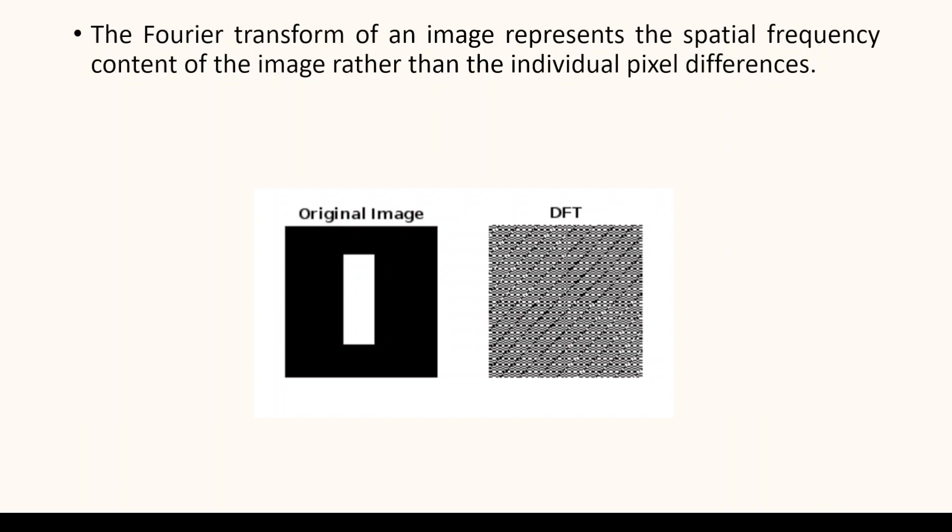Now let's look at the Fourier transform of an image. The Fourier transform represents the spatial frequency content of the image rather than individual pixel differences. It decomposes the image into a set of sinusoidal functions, each representing a different spatial frequency. In the frequency domain, the Fourier transform provides information about the amplitude and phase of each spatial frequency component present in the image.